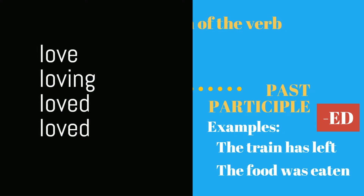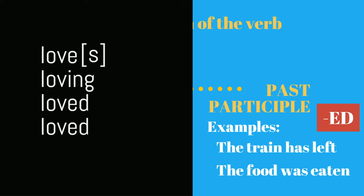So a verb like "love" has four forms: love, loving, loved, loved — along with "loves," so really five. In regular verbs, the third and fourth forms are the same: loved, loved.